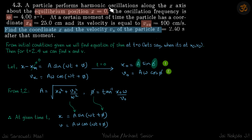We are given a particle that is performing SHM and some data is given regarding that particle. We need to find the equation of motion such that we can find the coordinate and velocity at any given time. The equilibrium position is given as x equal to zero, omega is given, and at a certain moment of time when x is x-naught, the velocity is v x-naught.